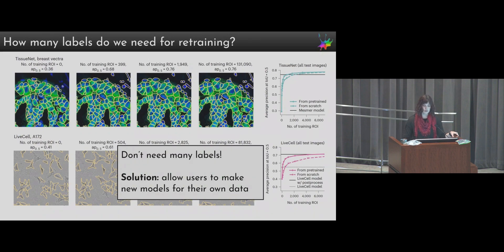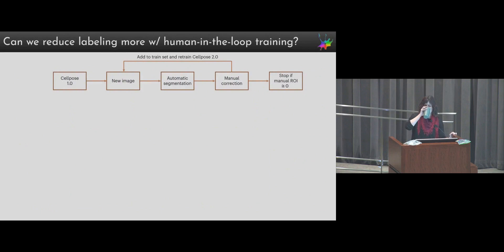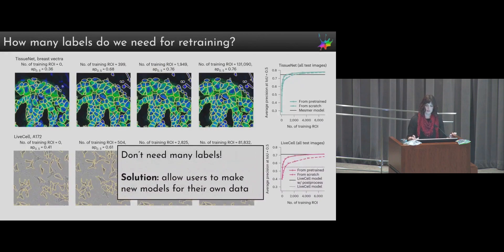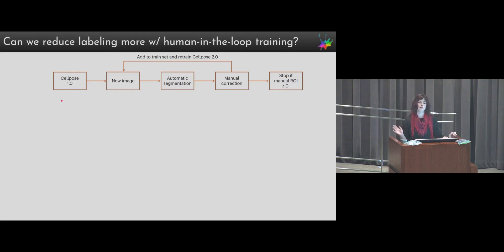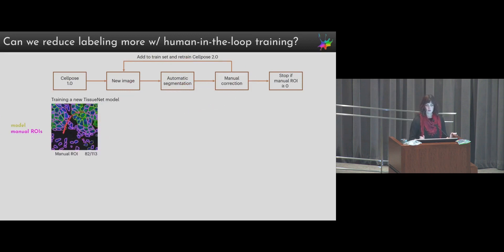We were happy that you don't need that many labels to retrain a model, so the solution we decided to implement was to allow users to make new models for their own data. We wanted to make a solution that doesn't need many labels and tried to reduce the labeling even further with human-in-the-loop training. 2,000 ROIs isn't too many, but you really don't want to label 2,000 either, so the goal is to reduce it even more. Basically, you run CellPose on an image, get segmentations in yellow, and then as a user you correct them — drawing manual ROIs in purple.